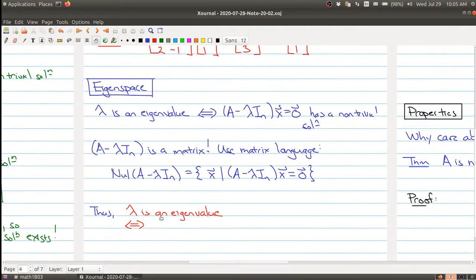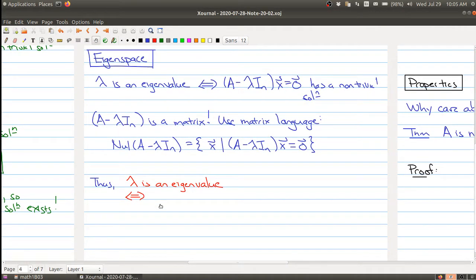So let me just kind of recap. Thus, lambda is an eigenvalue if and only if the null space of this matrix strictly contains the zero vector. So it contains more than zero. We'll always have the zero, but it contains more than zero.